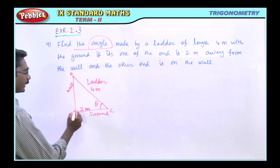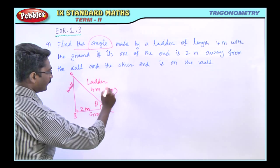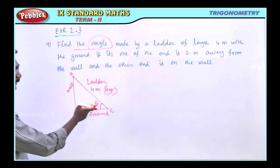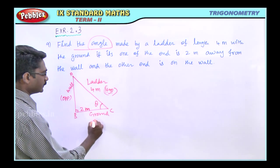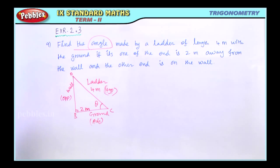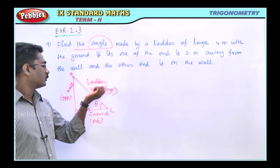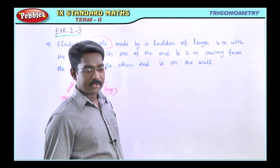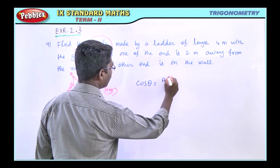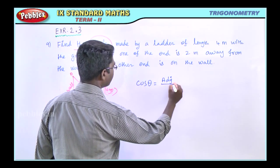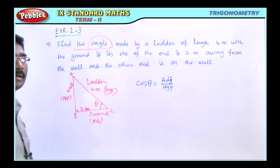We take the right angle as 90 degrees. The hypotenuse side is the ladder. The wall side is opposite to theta, and the ground side is adjacent to theta — the adjacent side. The formula is: cos theta equals the length of the adjacent side divided by the length of the hypotenuse side.